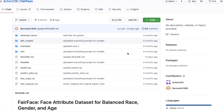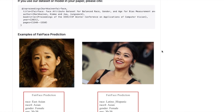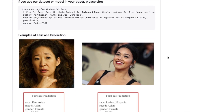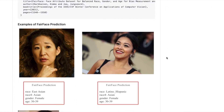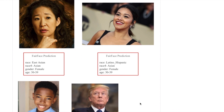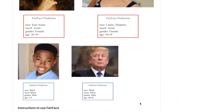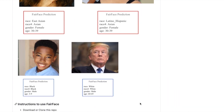They found that when given a set of labels including FairFace race labels and degrading terms such as 'criminal' and 'animal,' the model tends to classify images of people aged 0 to 20 into this degrading category at a rate of around 32% — the highest rate out of all age groups.